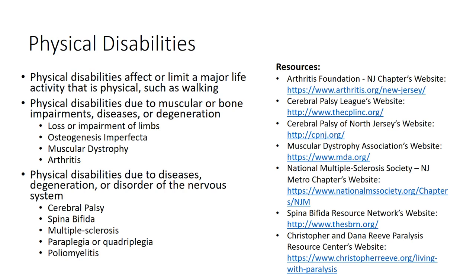On this slide is also a list of references for various physical disabilities. They include websites for the Arthritis Foundation New Jersey Chapter, the Cerebral Palsy League, the Cerebral Palsy of North Jersey, the Muscular Dystrophy Association, the National Multiple Sclerosis Society New Jersey Metro Chapter, the Spina Bifida Resource Network, and the Christopher and Dana Reeve Paralysis Resource Center. All of the resources for physical disabilities are also included at the end of the presentation on slide 17, which is called Other Resources.